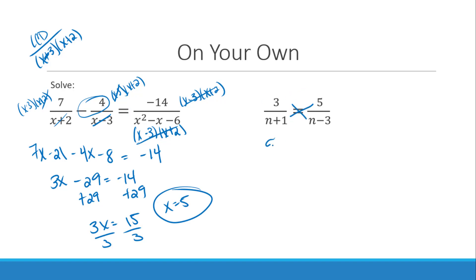Here, I'm going to use cross multiplication. This is 5 times n plus 1 is equal to 3 times n minus 3. So this is 5n plus 5 is equal to 3n minus 9. I'll move the 3n over first. 2n plus 5 is equal to negative 9. Subtract 5. 2n is equal to negative 14. So my final solution here would be n is equal to negative 7, which does not cause the denominator to be equal to 0.